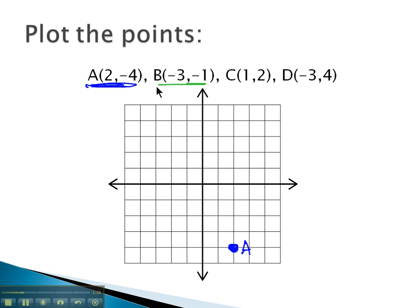Point B is at negative 3 comma negative 1. Right up, but because they're both negative, we might think about them as moving left down, showing the opposite direction. So negative 3 would be our left, and then negative 1 is down. And that takes us to our point for B.